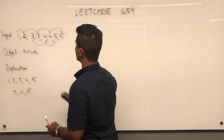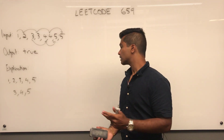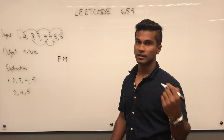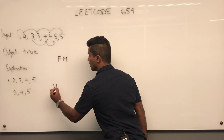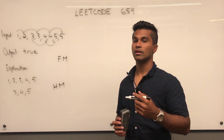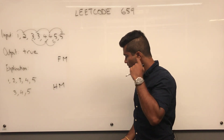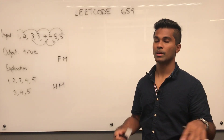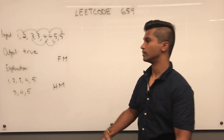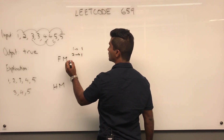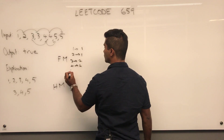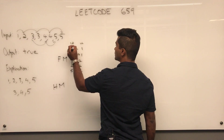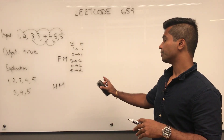We're going to be using two hash maps. One I'll call fm, which stands for frequency map, and the other called hm, which stands for hypothetical map. Both are of key-value type integer-integer. The frequency map is a standard frequency map where we find keys and how many of them there are. For example: one is one, two is one, three is two, four is two, five is two.